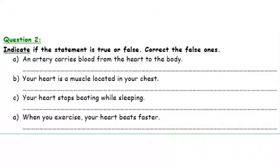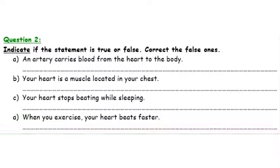In question 2, we have to indicate if the statement is true or false, and also correct the false statements. First statement: An artery carries blood from the heart to the body. Arteries hold the bright red blood since this blood is delivering oxygen and nutrients to all parts of the body. So the blood in the artery moves from the heart to the organs. This means this sentence is true.